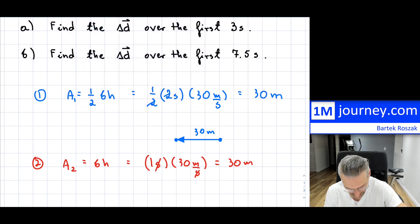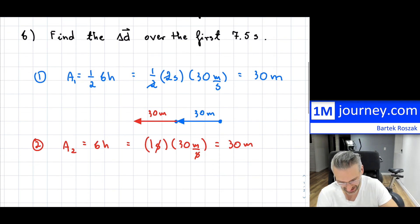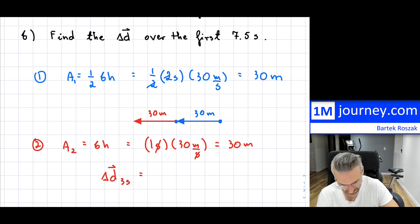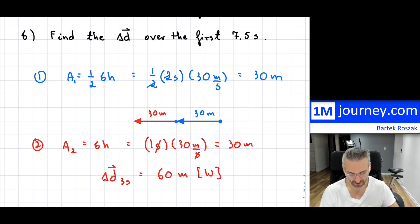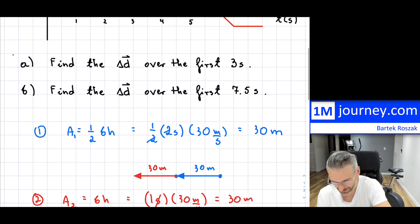We're just going constantly but we've covered another 30 meters. So adding them together, you would have had a displacement over the first three seconds equal to 60 meters west. That would have been the actual displacement for Part A.